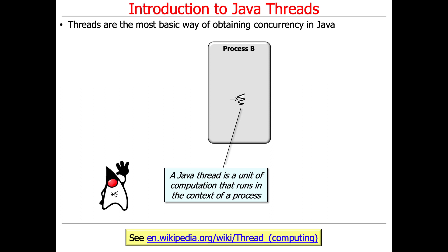Threads are the fundamental way of doing concurrency in Java. A Java thread is a unit of computation that runs in the context of a process. There's a link to find out more about threads. We have some icons to help make sense of this — the gray round angle represents a process, and a thread is a unit of computation running in the context of that process.